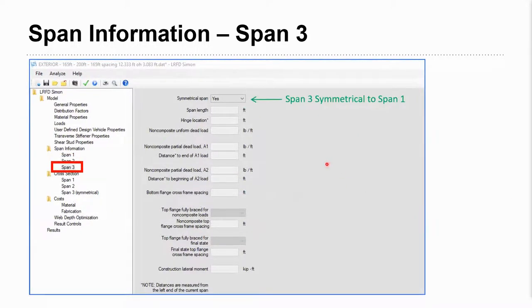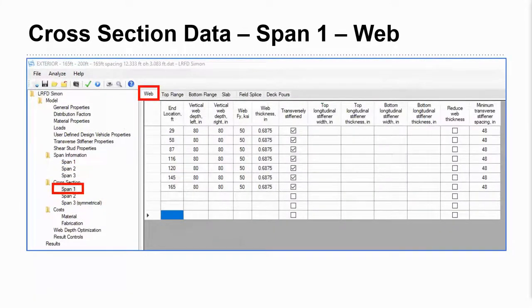And then lastly, this is the easiest tab when you have a symmetric span. Span three, we've toggled the symmetric, so we're done. We know we can just analyze and investigate span one and we're good to go for span three, unless something of course was different, the span length or the loading of some kind. So now we're done with the span information tab.